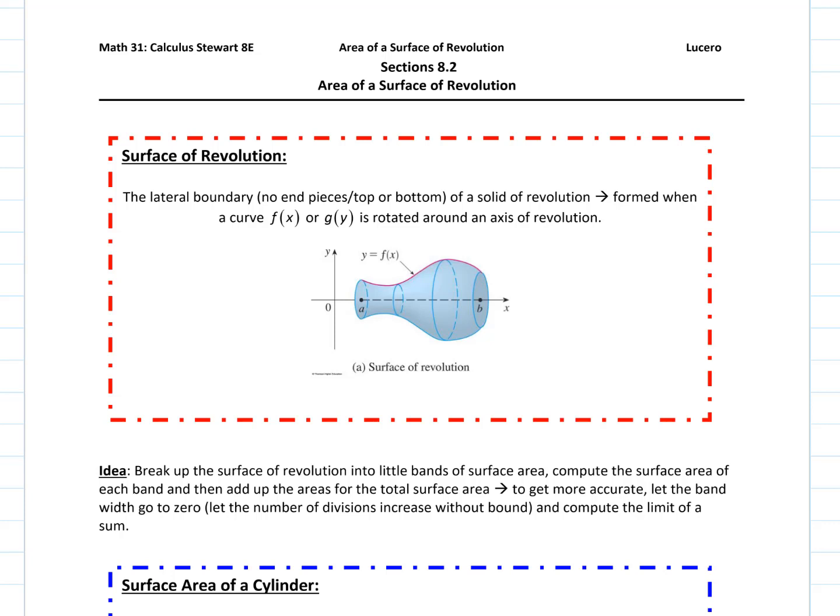Section 8.2 is surface areas of solids of revolution. To move a bit faster through this particular proof, I typed it up and we'll run through it and focus on the actual formula — where it comes from and how we use it in some examples.